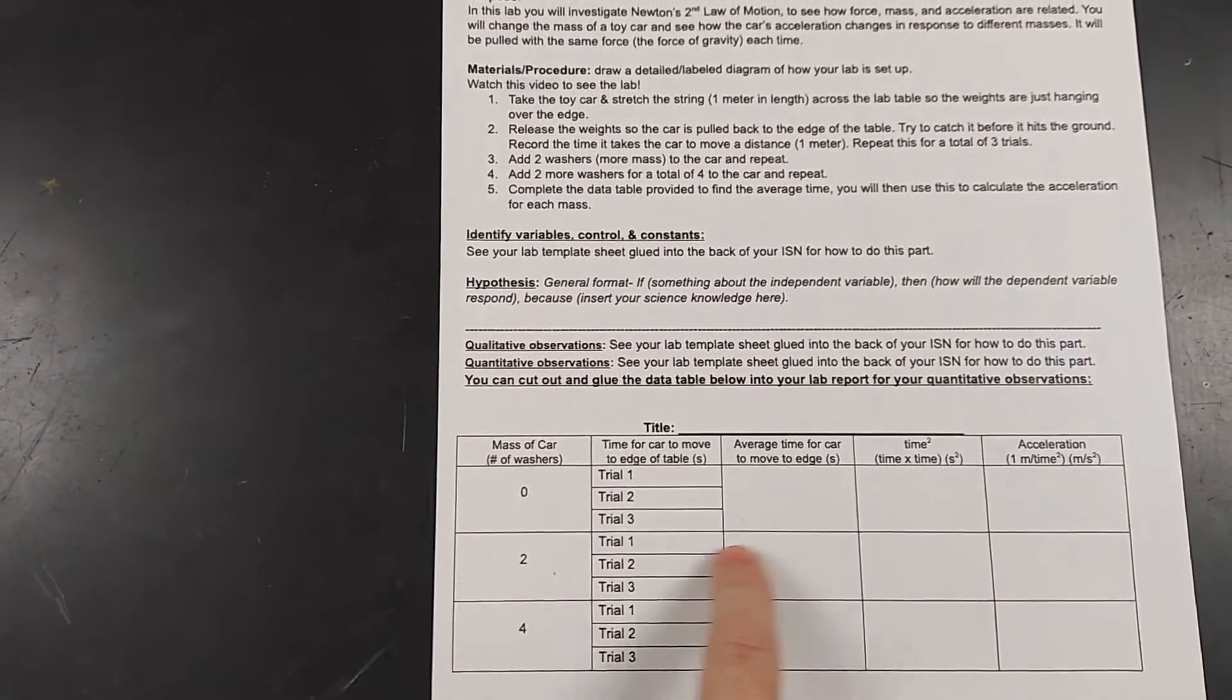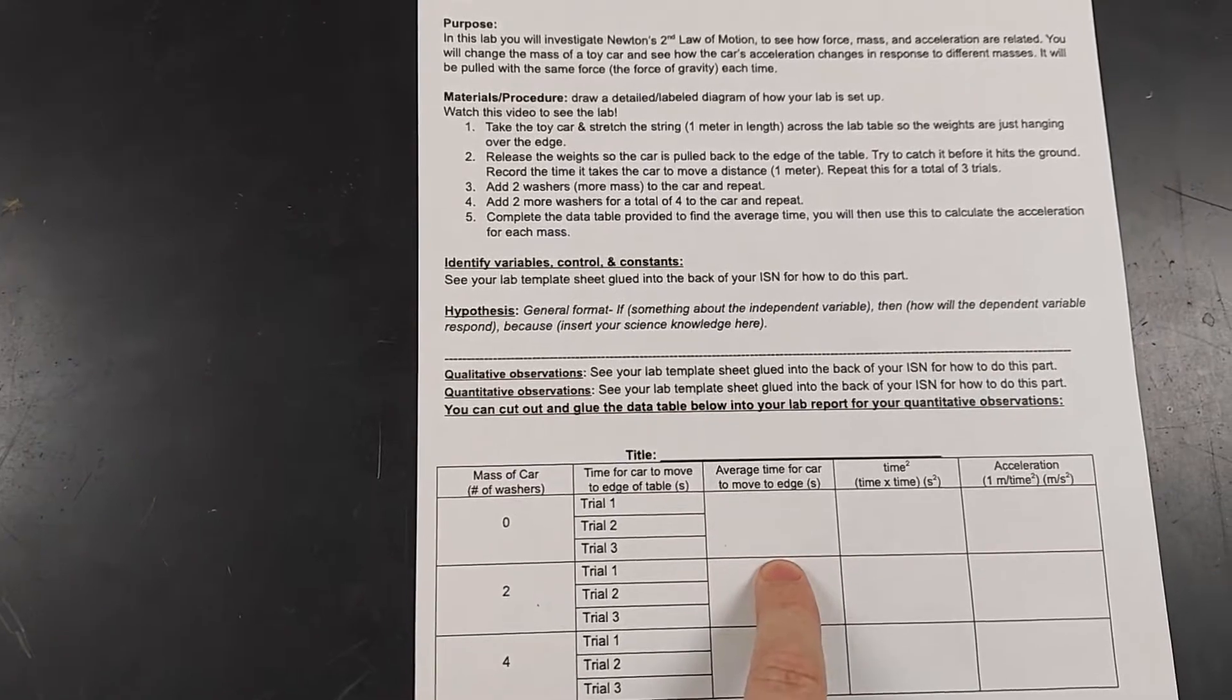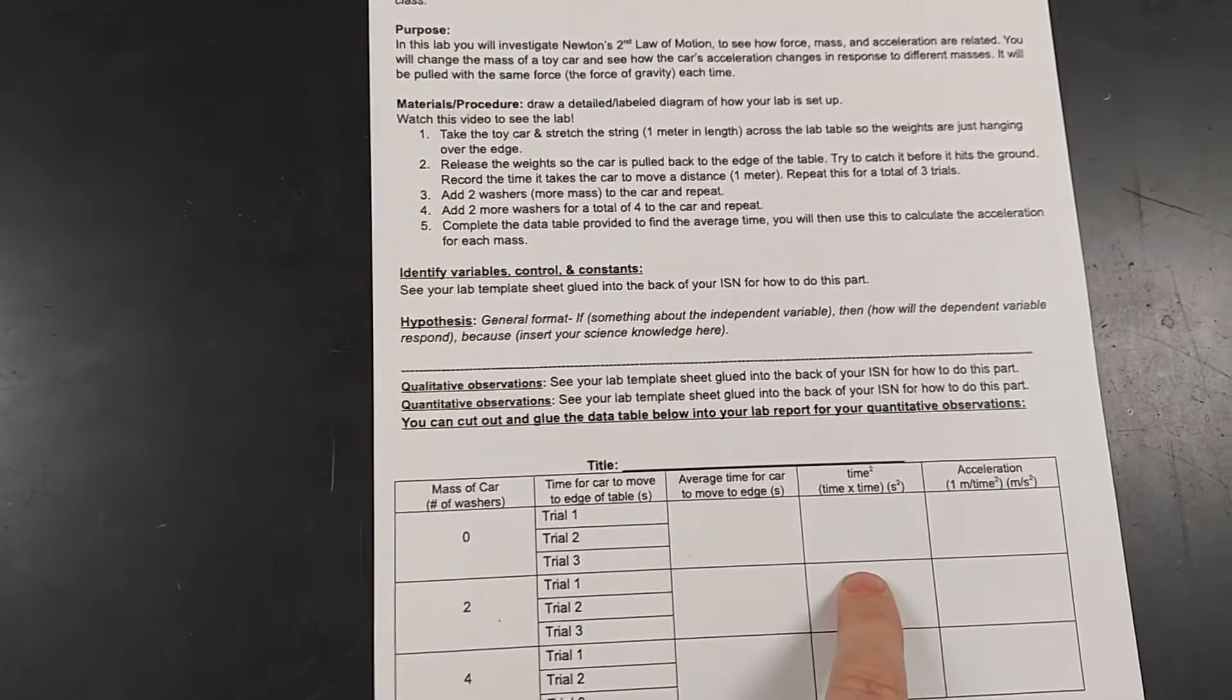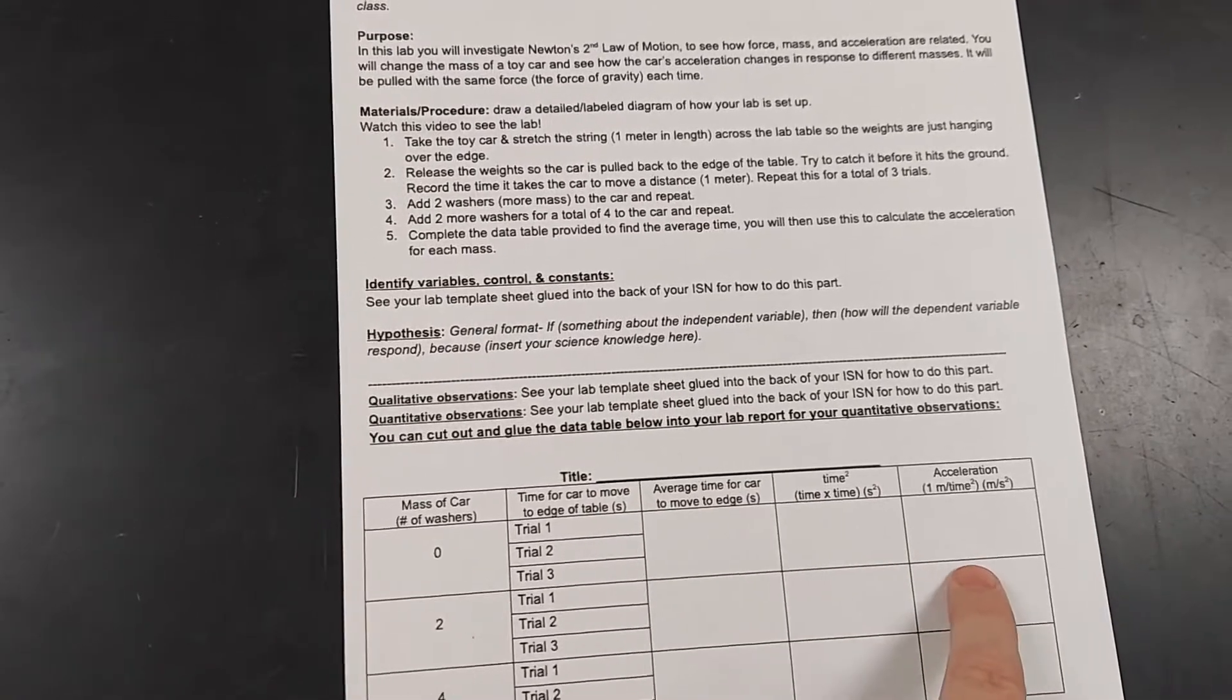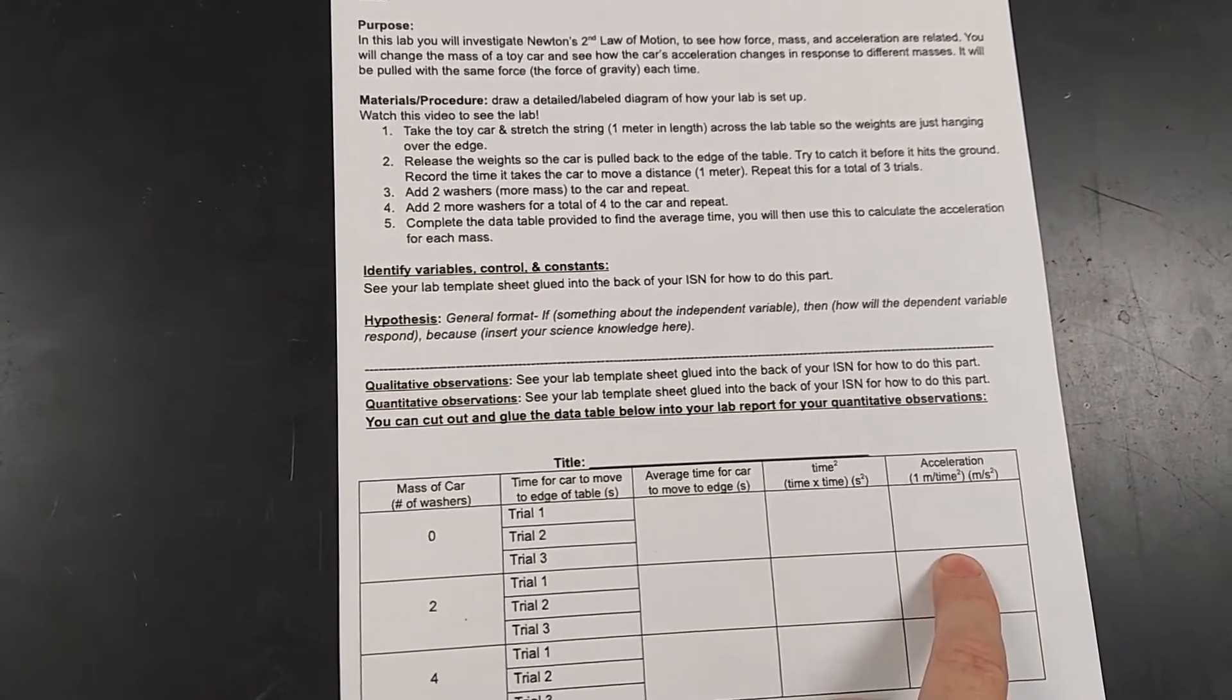We'll do three trials. From that, you can add your three and divide by three to find the average time. You're going to square your time—multiply it times itself. Then one divided by your time squared is going to be your acceleration.